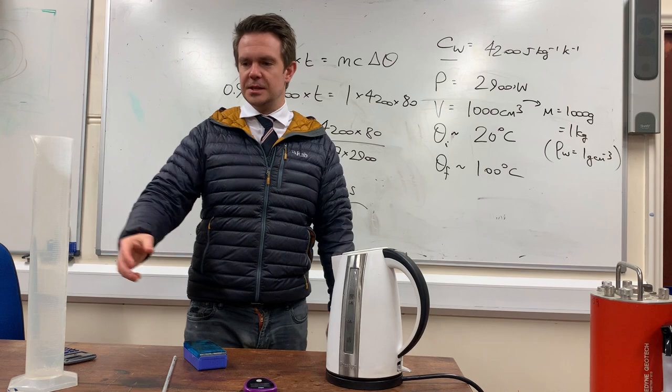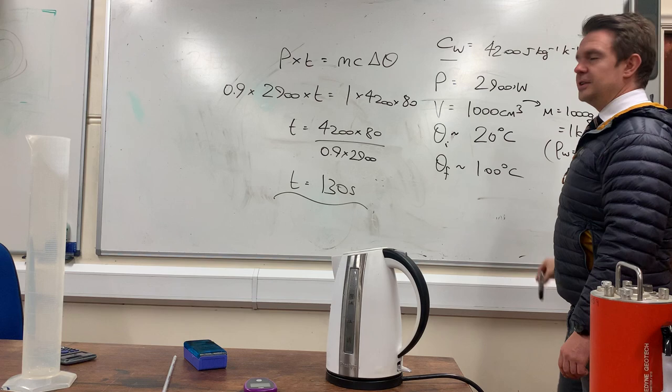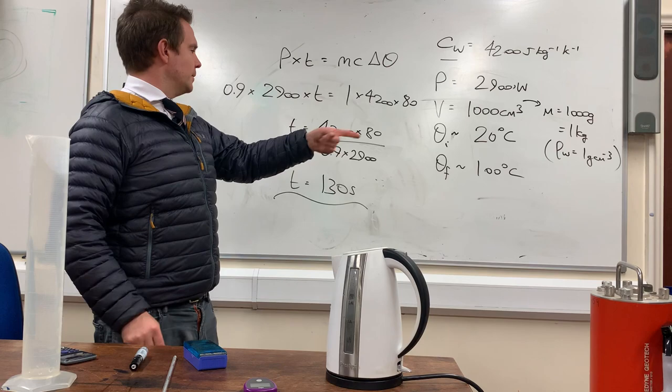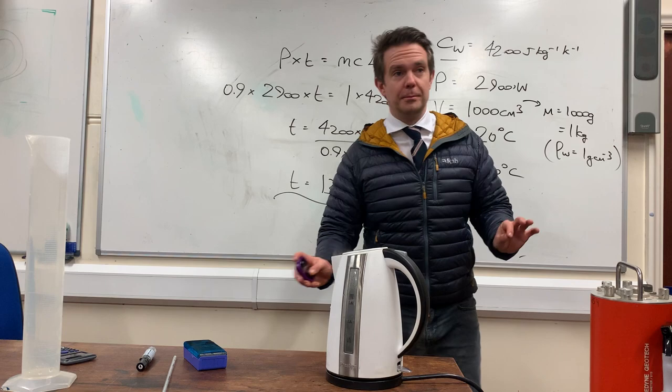If you wanted to, and it would be easy to do this, you could take each of these values and put an uncertainty on it. There's an uncertainty on every measurement you make in physics. You can then follow that through to work out an uncertainty on your final answer.